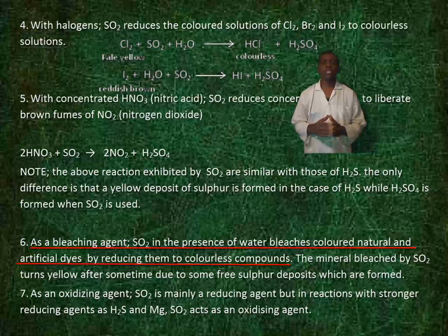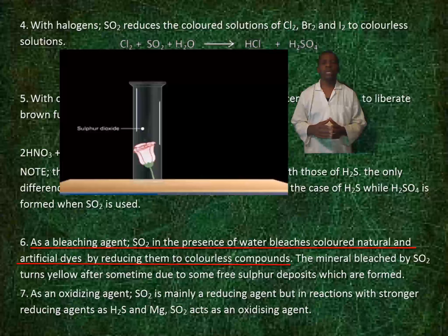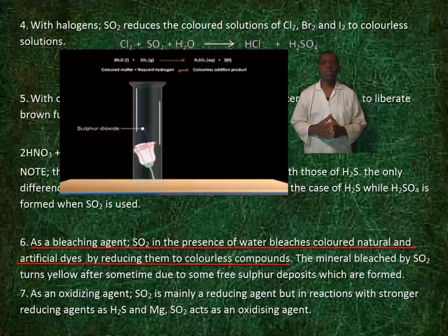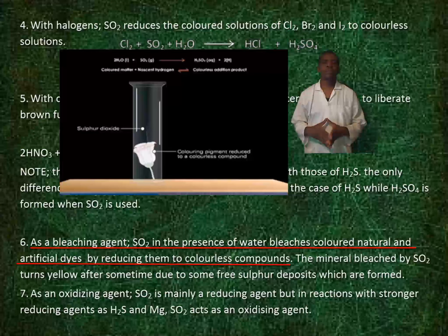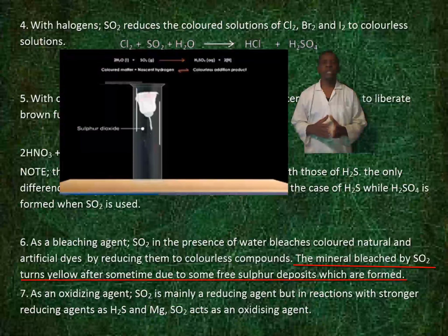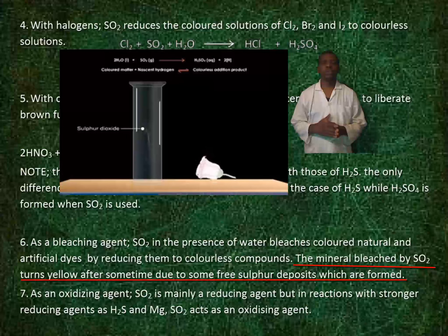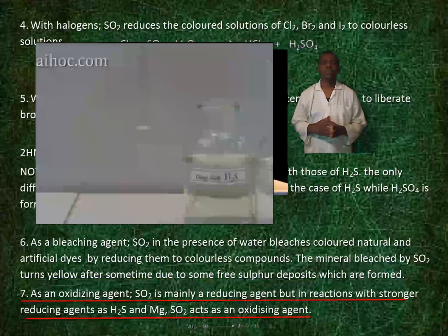As a bleaching agent, sulfur dioxide in the presence of water bleaches colored natural and artificial dyes by reducing them to colorless compounds. However, the material bleached by sulfur dioxide turns yellow after some time due to free sulfur deposits which are formed.